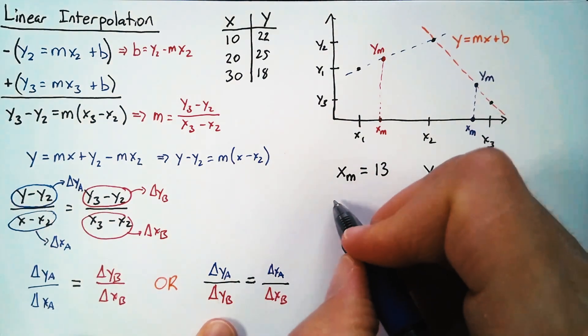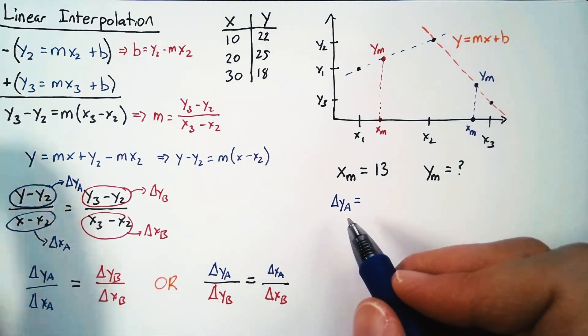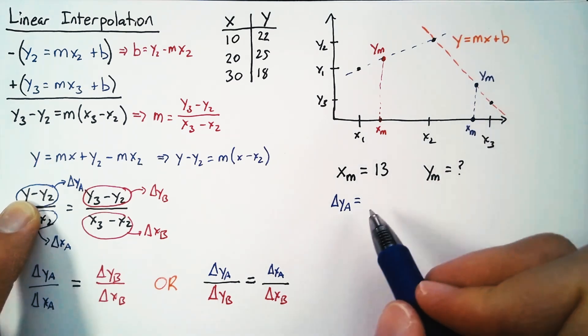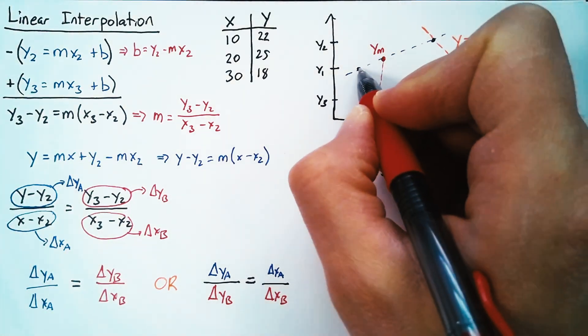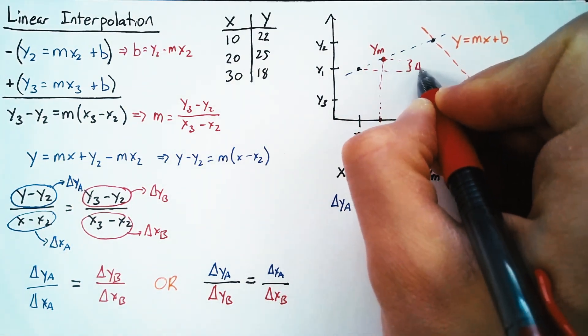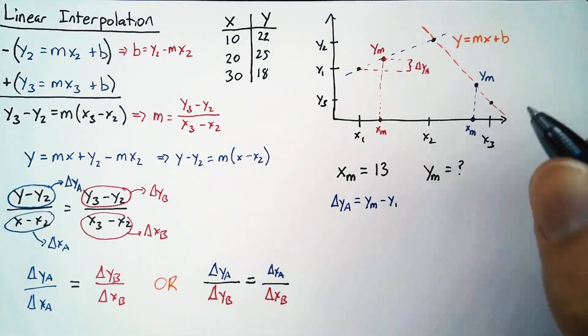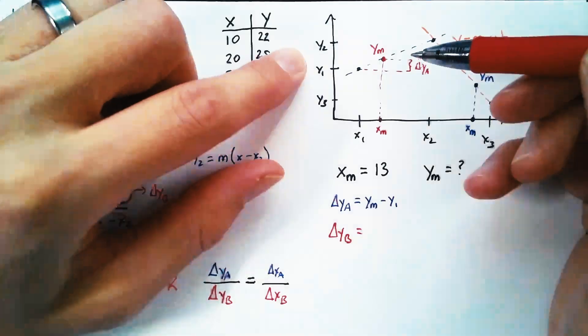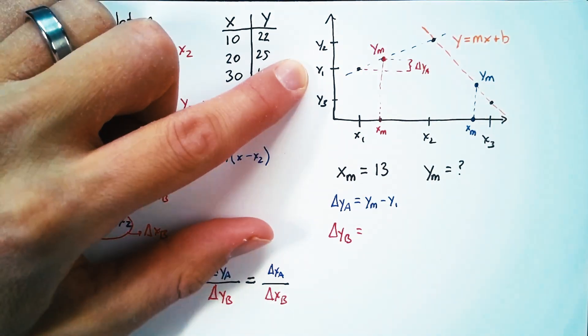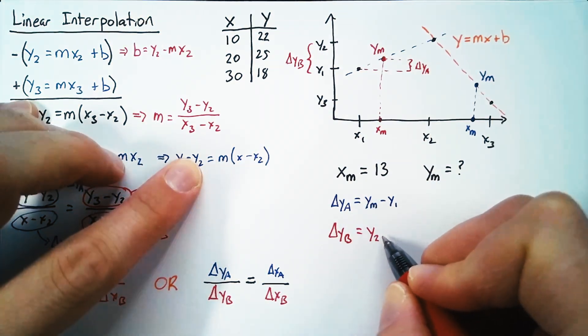Okay, so as before, we're going to use this equation. Now our delta y sub a, before we had it as y minus y2, but in this case, we're finding a point in between one and two. So we actually want our ya to be this distance here. And so delta ya is ym minus y1. Now delta yb, before it was y3 minus y2. Now it's going to be y2 minus y1, again, because the point we're looking for is in between those two points. So our delta yb is here.